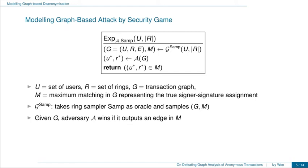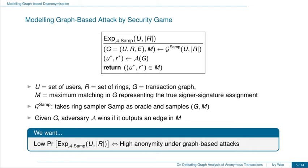To model a graph-based de-anonymization attack, we introduce the following security game. In the experiment, GSAM inputs the set of users and the number of rings, and outputs a transaction graph G together with a maximum matching M in G, which represents the true signer-signature assignment. Note that the randomness of the output graph G depends on the ring sampler used. Given the graph G, the adversary wins if it can output an edge in G which is also in M — that is, it guesses the real signer of a ring correctly. Our goal is to find a ring size which leads to a low winning probability for the adversary, meaning high anonymity for users under graph-based attacks.